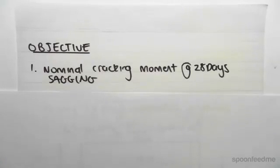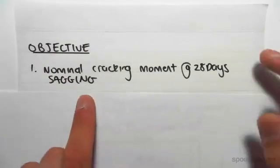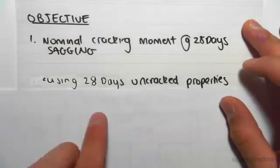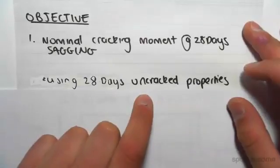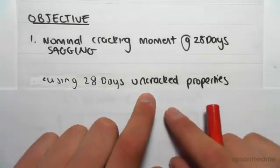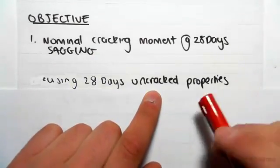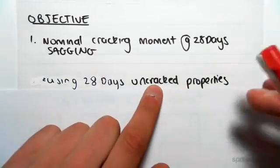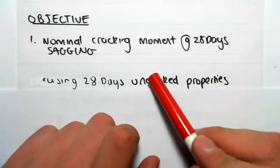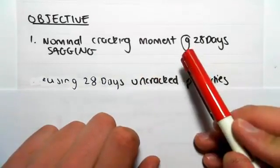Hey guys, the objective of this video is to find the nominal cracking moment at 28 days sagging. Just to demonstrate what properties we're going to be using: because we're finding the cracking moment, it might be counterintuitive, but we're going to be using uncracked properties. The reason is because just before it cracks, it's obviously uncracked, so just before the point of cracking, we have to use those properties.